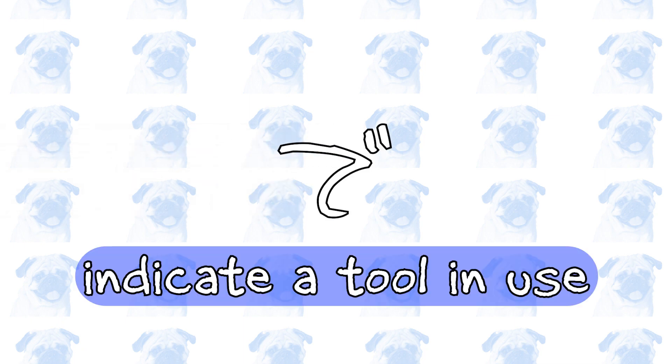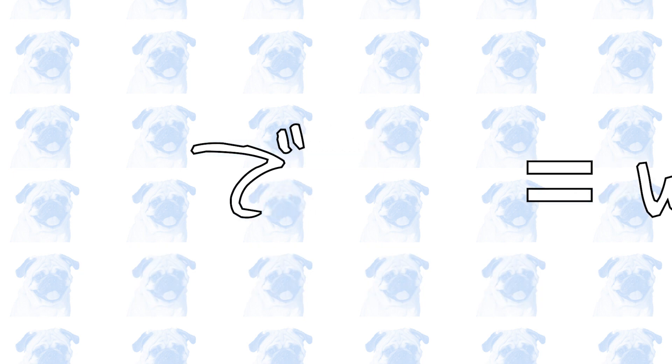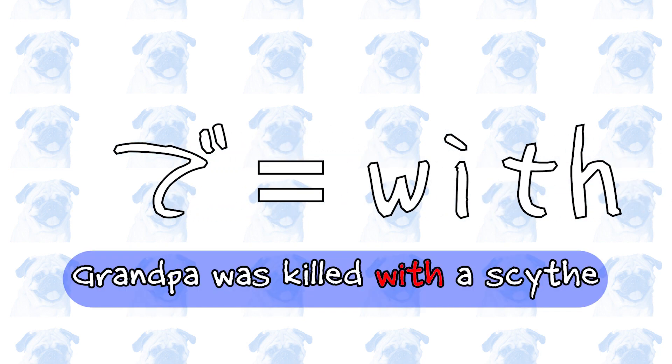The Japanese particle で can indicate a tool with which an action is performed. で, in this sense, is equivalent to the English preposition WITH. Let's look at a few example sentences.